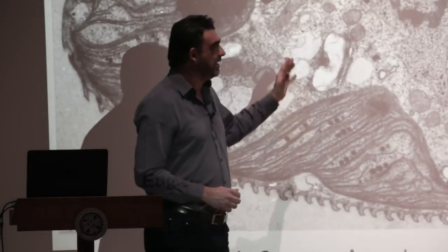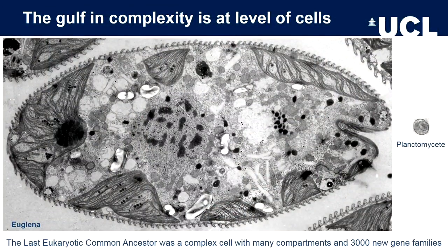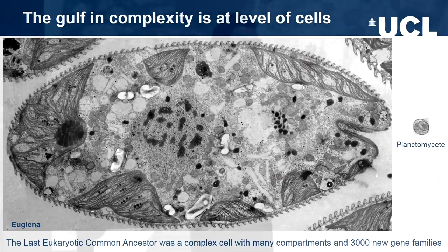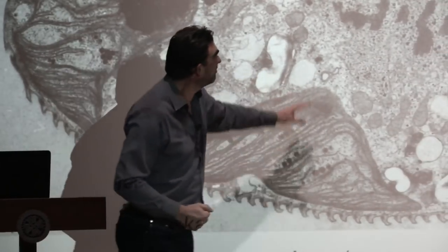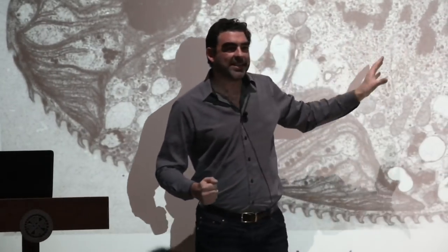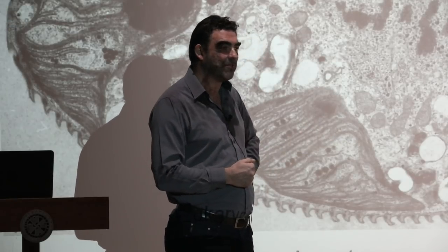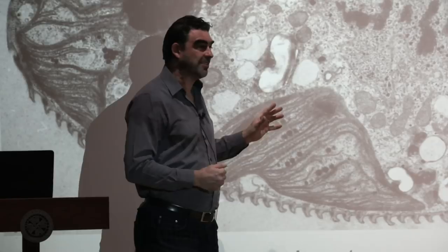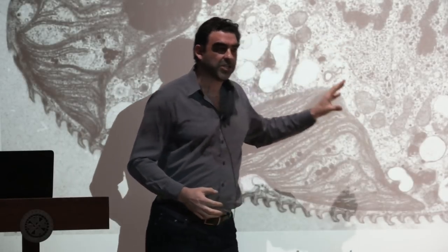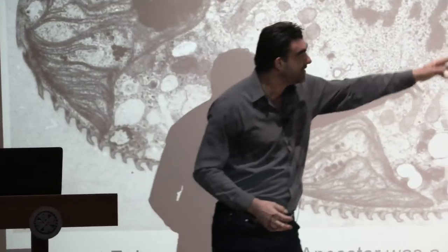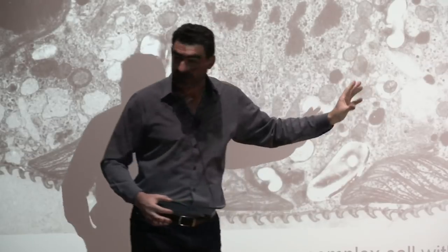This shows the level of cells — the 'void,' you might say. Planctomycetes is a relatively complex bacterium with an internal compartment that has been compared to the nucleus, though it's really nothing like one. Across from it is a bog-standard eukaryote — this is Euglena — with chloroplasts, nucleus, and mitochondria. On average, eukaryotes are about 15,000 times larger than bacteria by cell volume. You don't need to know what all of this is to appreciate that it's a different scale altogether.